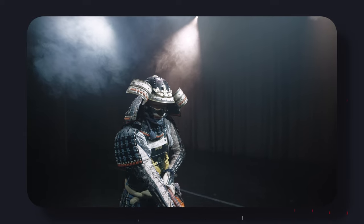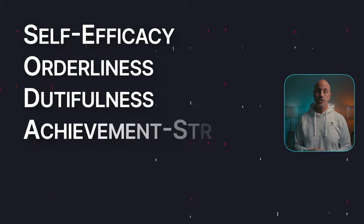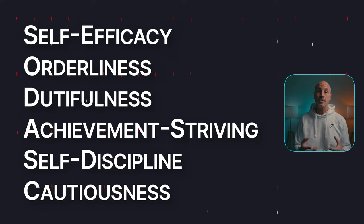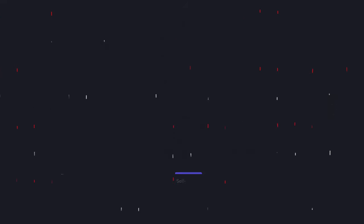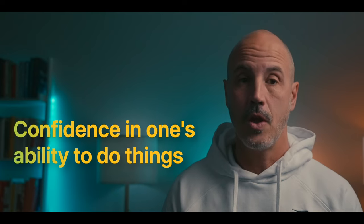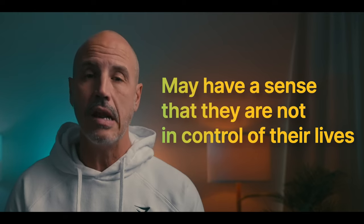Conscientiousness is made up of the categories: self-efficacy, orderliness, dutifulness, achievement striving, self-discipline, and cautiousness. Self-efficacy describes confidence in one's ability to do things. Those high in self-efficacy believe they have the intelligence, drive, and self-control necessary for achieving success. Low scorers do not feel effective and may have a sense that they are not in control of their lives.